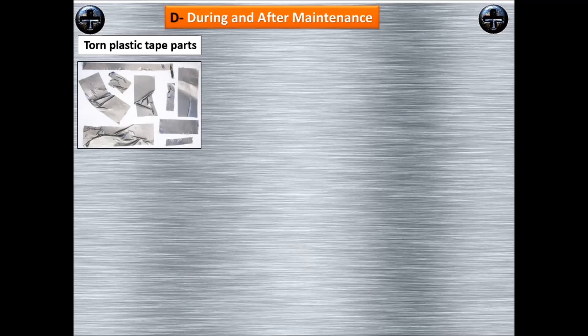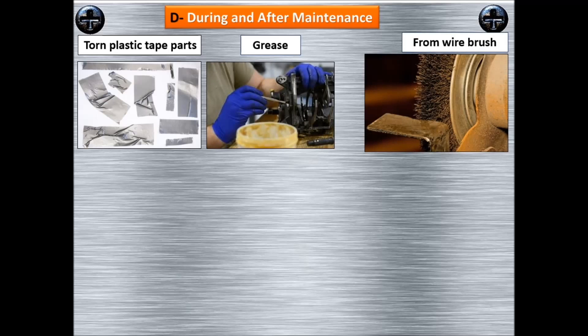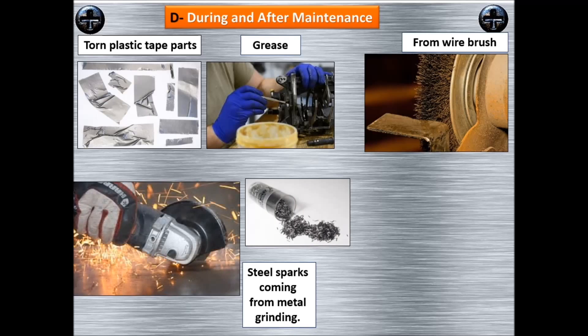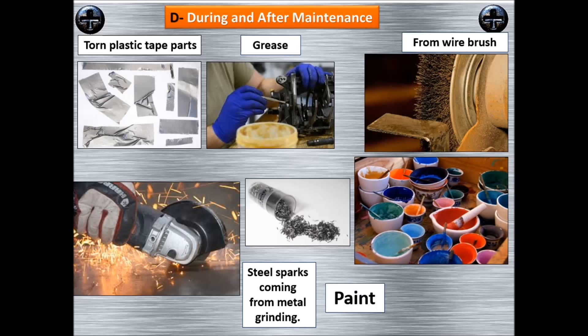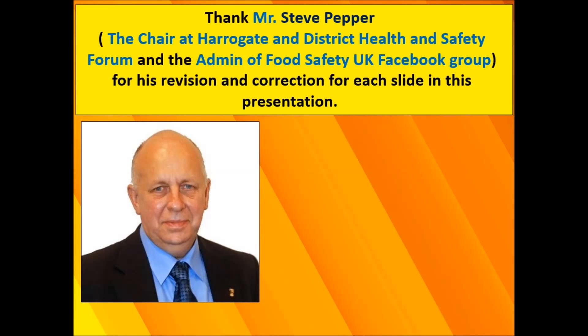Continuing the physical sources from during and after maintenance: torn plastic tape parts after maintenance, grease and oil after maintenance, wire brush parts, steel parts coming from metal grinding, and from painting — paint forms a very critical physical hazard.